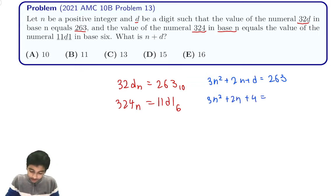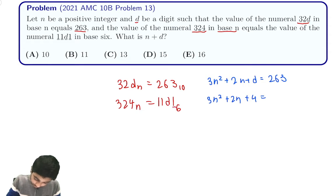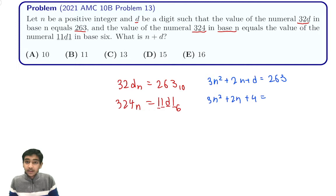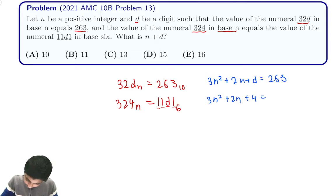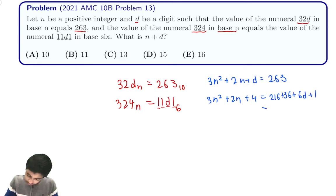Now what is 1d1 base 6? Let's convert it algebraically. The place values are 1, 6, 36, and 216, so this is going to be equal to 216 plus 36 plus 6d plus 1, which is equal to 253 plus 6d.